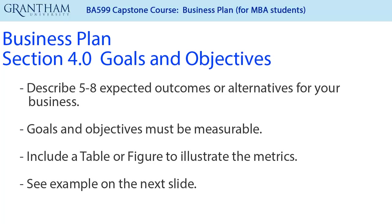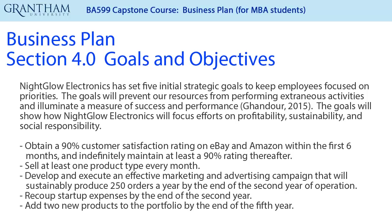Next, we will look at goals and objectives. You should describe between 5 and 8 expected outcomes or alternatives for your business. Remember, goals and objectives must be measurable, and you should include a table or figure to illustrate the metrics. Whereas a mission statement lays out an organization's purpose and core values, operating objectives direct activities toward key performance areas. Typical operating objectives include profitability, operating within a net profit, sustainability — helping to preserve, not exploit the environment — and social responsibility, acting as a good community citizen. In this example, the author presented a narrative describing his objectives and outlined five measurable goals, such as obtaining a 90% customer satisfaction rating, selling at least one product every month, and adding two new products to the portfolio by the end of the fifth year.